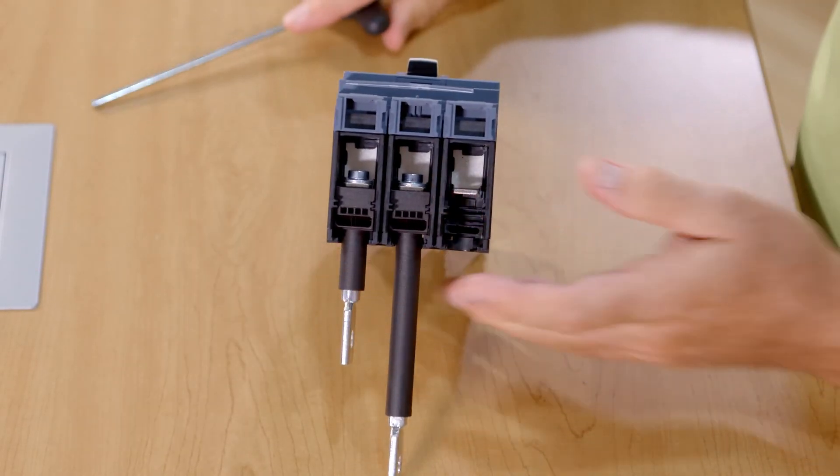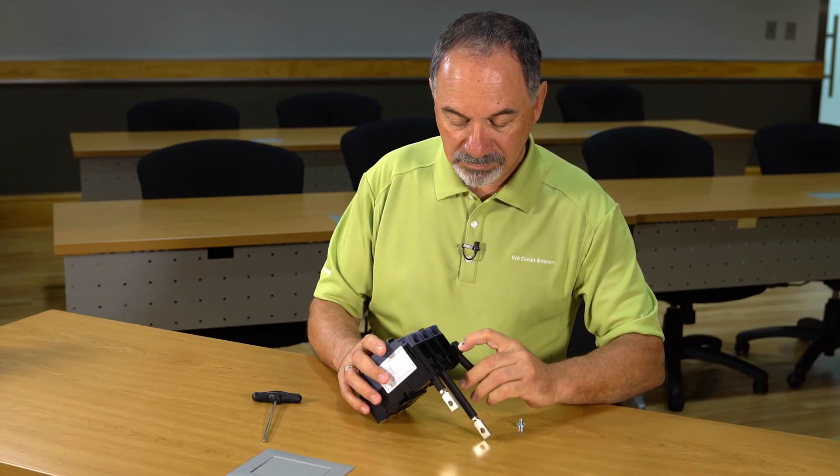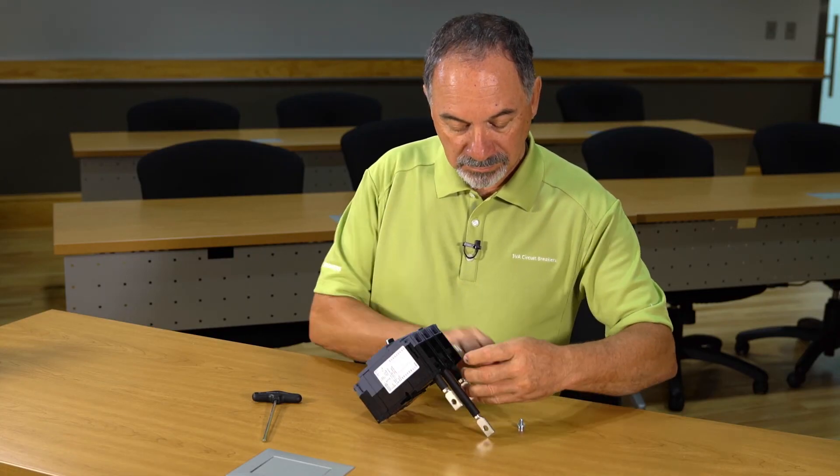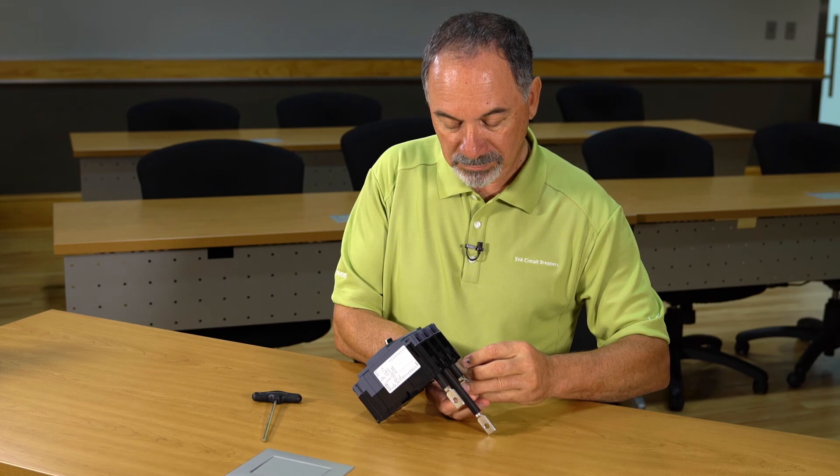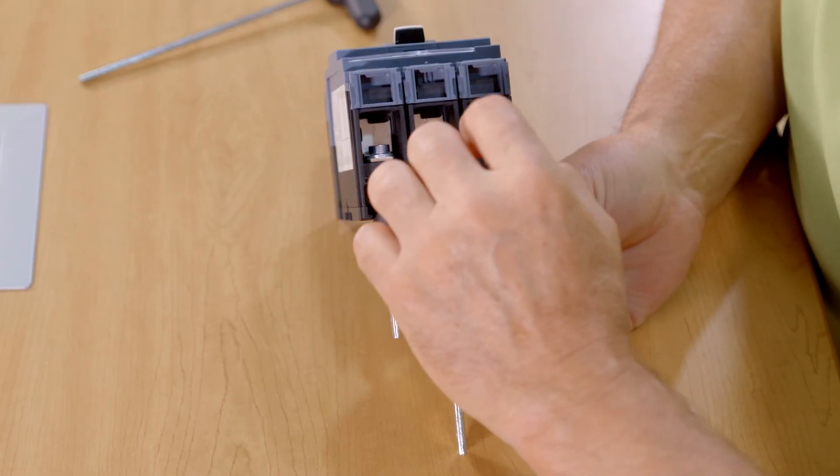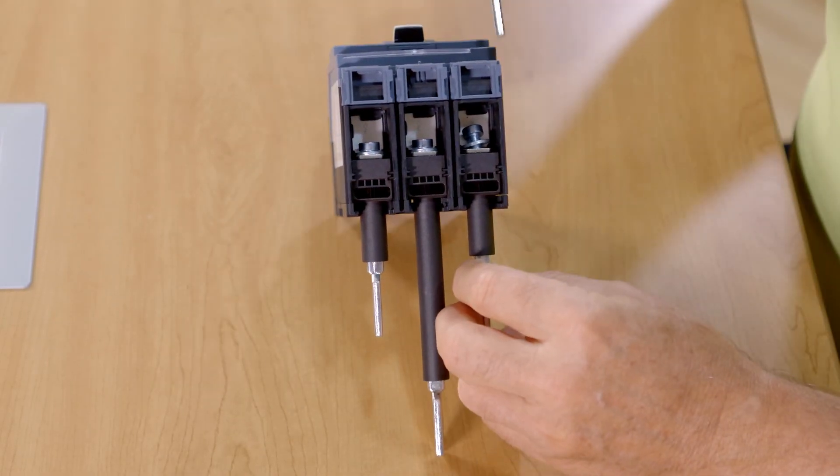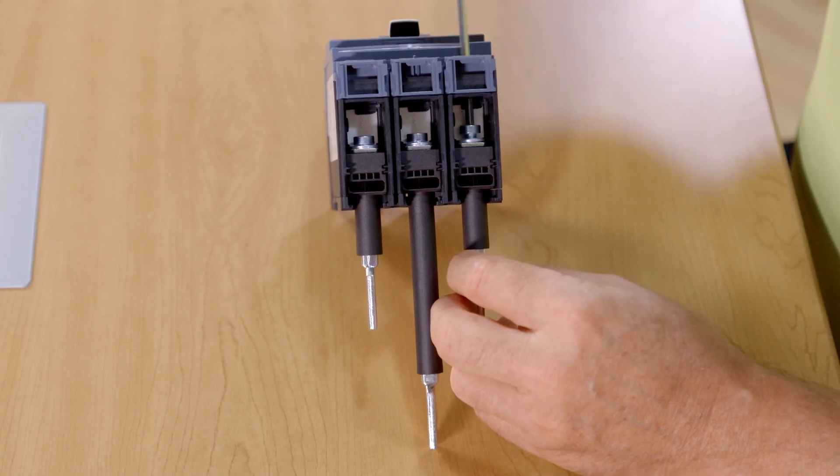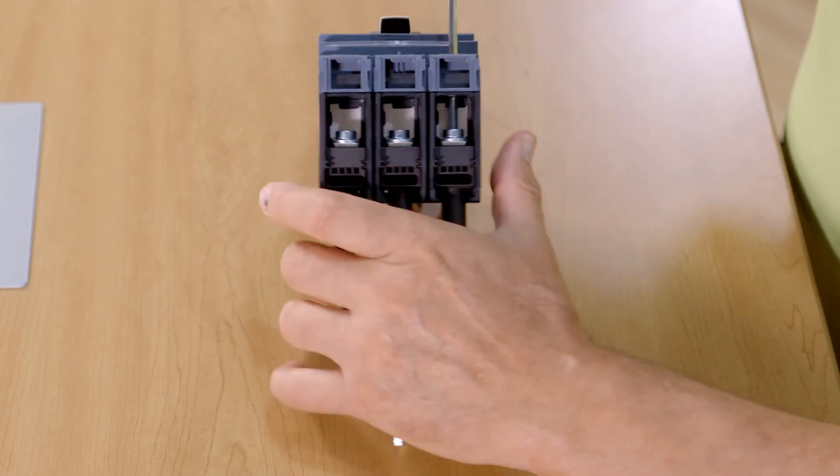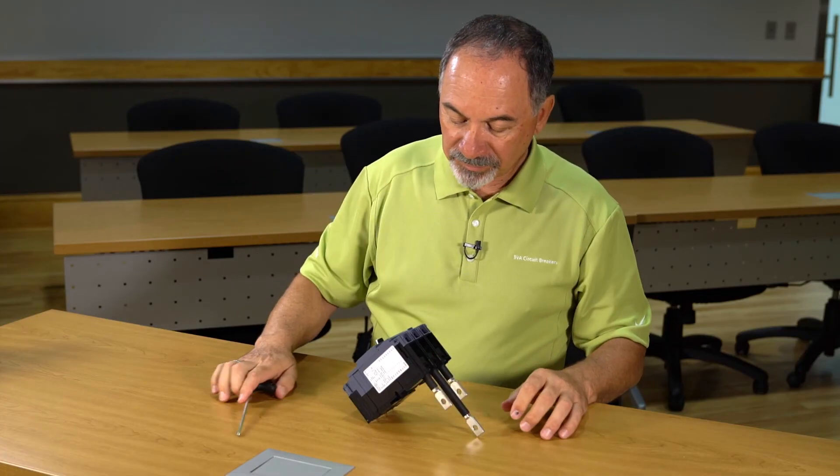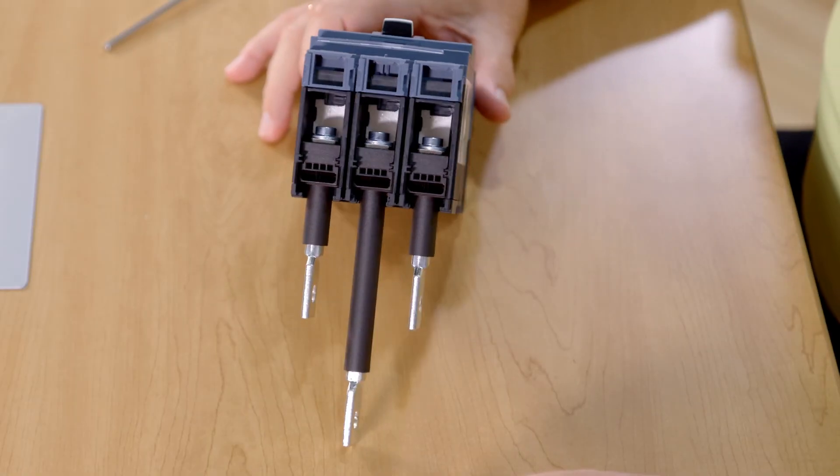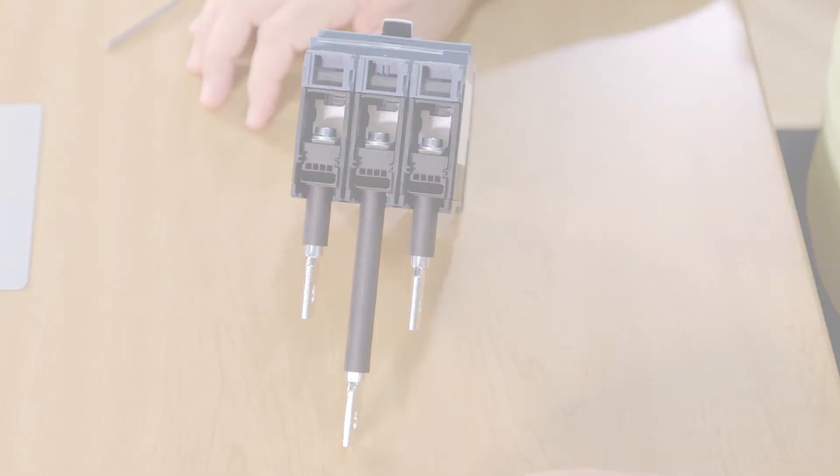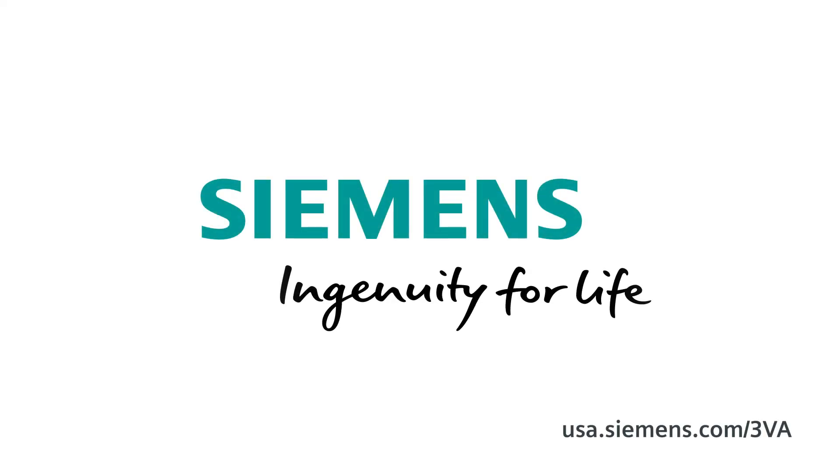Again, light torque for now. So, we've installed the rear connecting, flat rear connecting studs on the 3BA 125 amp breaker. Siemens, ingenuity for life.